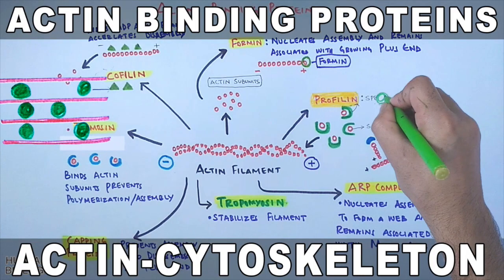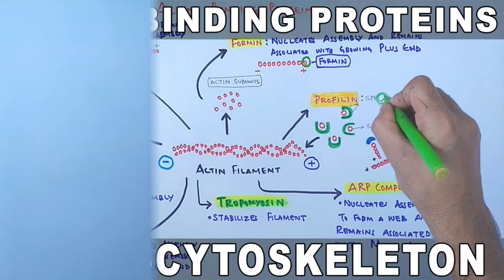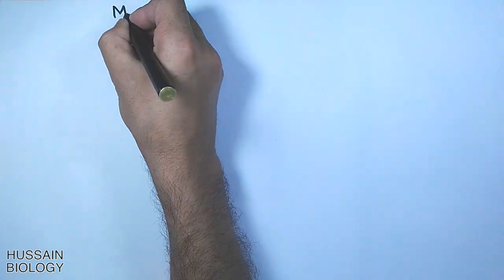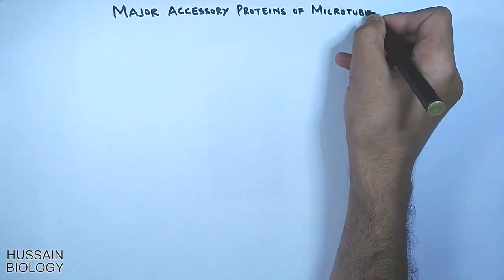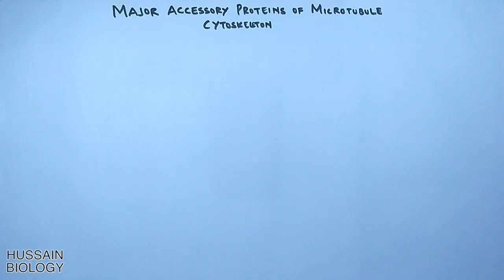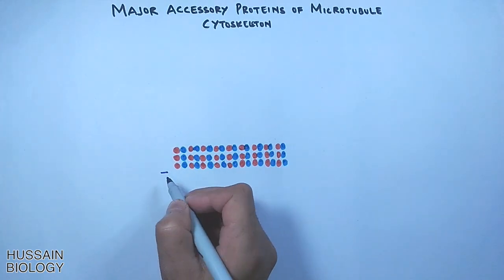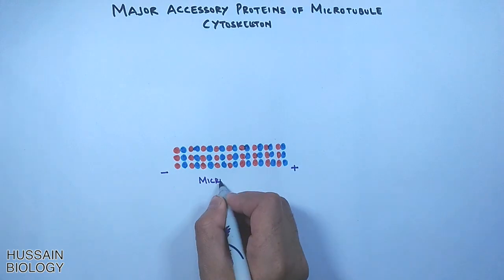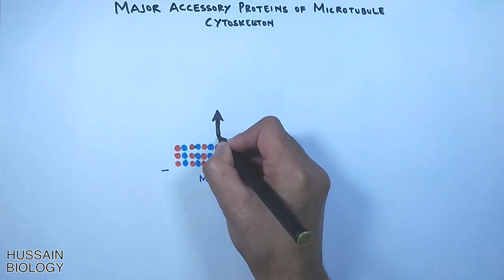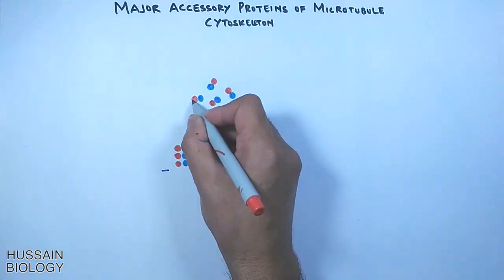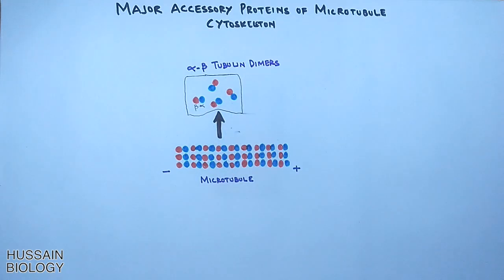In the previous video we discussed the accessory proteins of the actin cytoskeleton system. Now in this video we will be discussing the accessory proteins of the microtubule cytoskeleton system, or microtubule-associated proteins. In this diagram we can see the microtubule filament having minus and plus ends, and the microtubule filament is made up of dimers — what we call alpha-beta tubulin dimers.